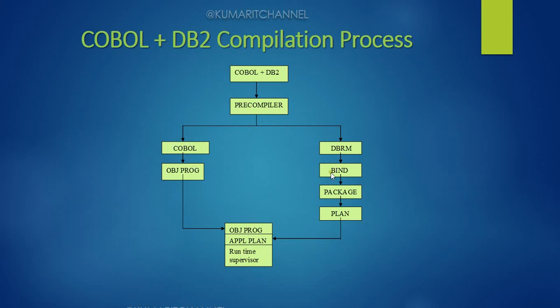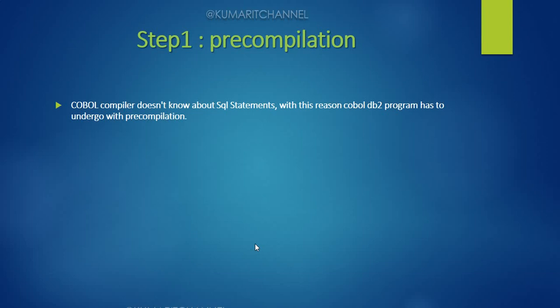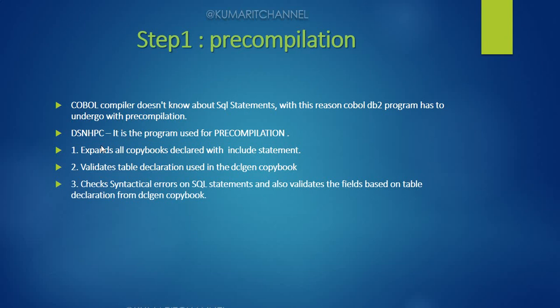From the DBRM we create a bind package and plan. When you run the program, it takes the object program from COBOL and the plan from the DBRM and executes. A timestamp is generated for both the modified source and the DBRM when they are separated — these timestamps must match at runtime. Now, Step 1 is pre-compilation: the COBOL compiler doesn't understand SQL, so the COBOL DB2 program must undergo pre-compilation.